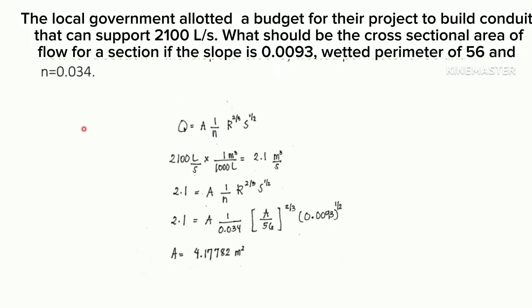Good day everyone. In this video we will learn how to solve problems in fluid mechanics, particularly in open channel. The local government allotted a budget for their project to build a conduit that can support 2100 liters per second. What should be the cross-sectional area of flow for a section if the slope is 0.0093, the wetted perimeter is 56, and roughness n equals 0.034?